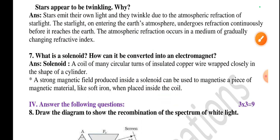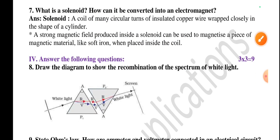Seventh one: What is a solenoid? How can it be converted into an electromagnet? A solenoid is a coil of many circular turns of insulated copper wire wrapped closely in the shape of a cylinder. A strong magnetic field produced inside a solenoid can be used to magnetize a piece of magnetic material like soft iron when placed inside the coil.